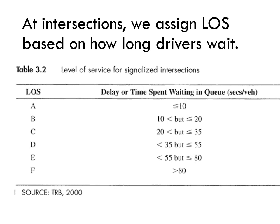We can measure LOS at intersections and highways. Let's start with intersections first. Here we assign a level of service based on how long a driver waits in a queue. If you spend a little bit of time, you get an LOS of A, but if you spend a lot of time — 80 seconds — you're going to get an LOS of F.